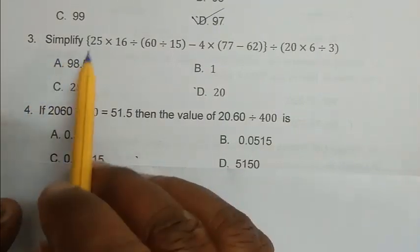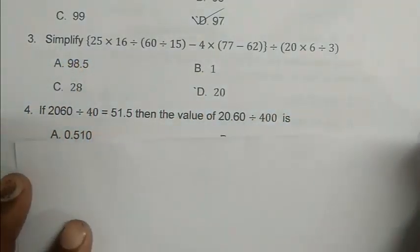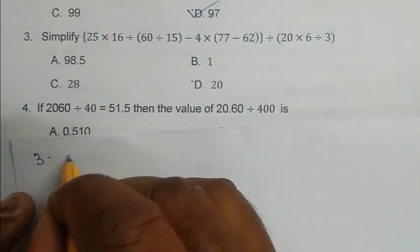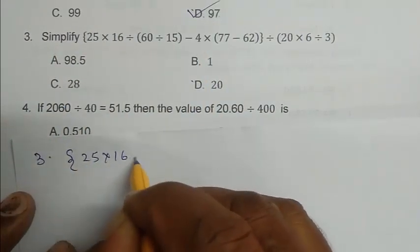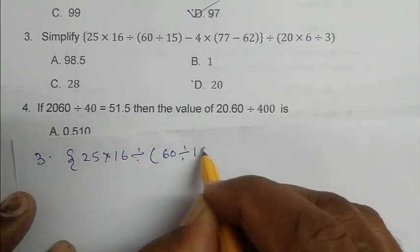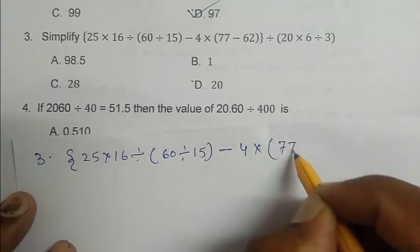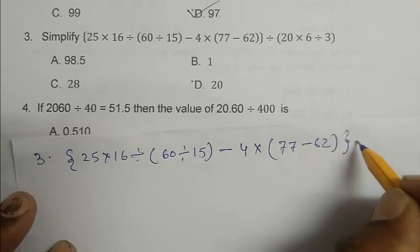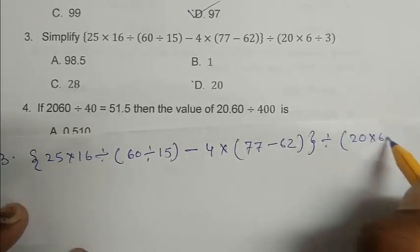Question number 3. Simplify this expression. So we write the expression and solve one by one. 125 into 16 divided by first bracket 60. Then 15, 4 into 77 minus 62, first bracket, second bracket, divided by 20 into 6 divided by 3.